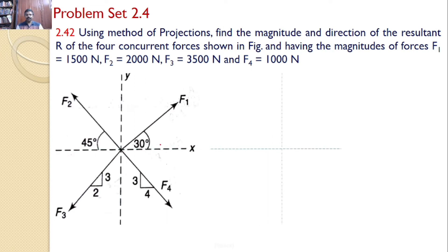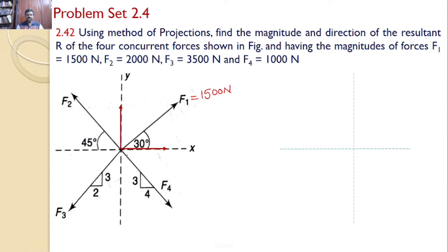For that, let us discuss force by force. First, let us take force F1, whose magnitude is given as 1500 N, and this makes an angle of 30 degrees with the x-axis. Hence, I can resolve this force into two components: one along the x-axis and another along the y-axis. Since this force makes an angle of 30 degrees with the horizontal, the horizontal component is 1500 cos 30, and the vertical component is 1500 sin 30.